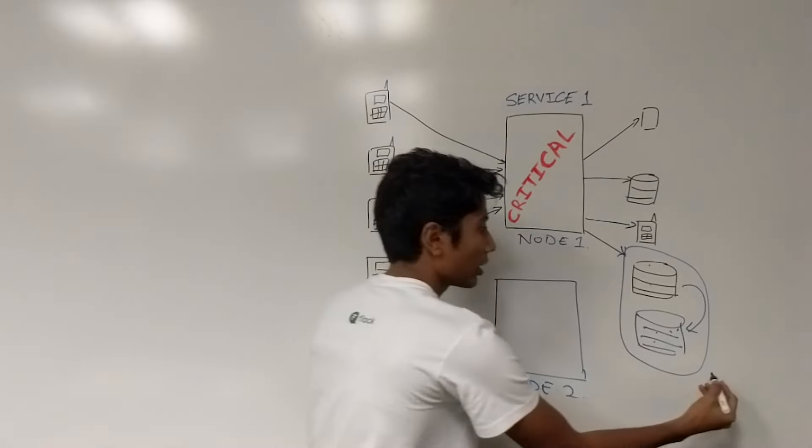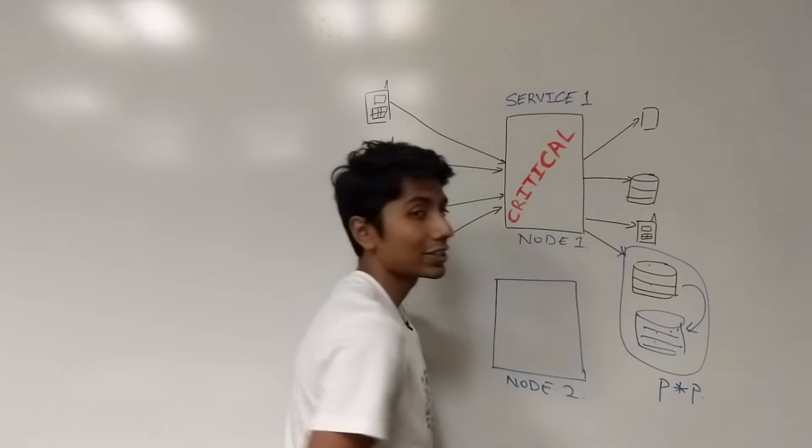So the probability of that, if one failing was P, then the probability has suddenly become P squared, which is much, much smaller.